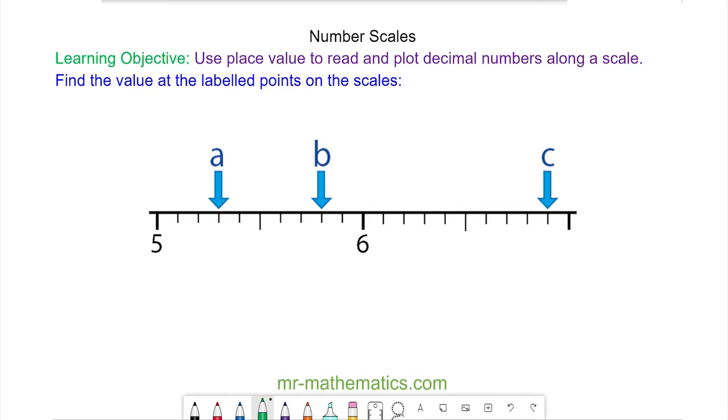You can see at the start of our scale we have 5 and then 6, and this will be 7. Halfway between 5 and 6 we have here, and this will be 5.5, and similarly this will be 6.5.